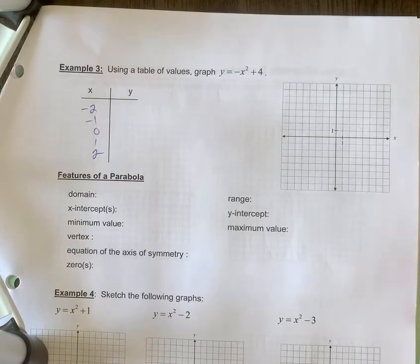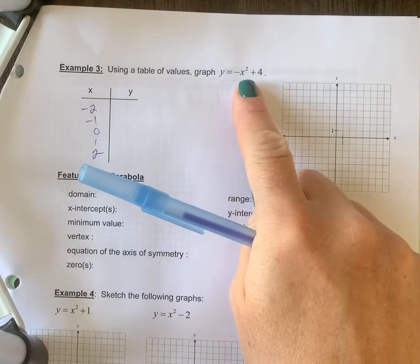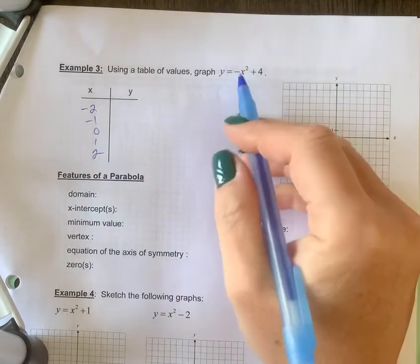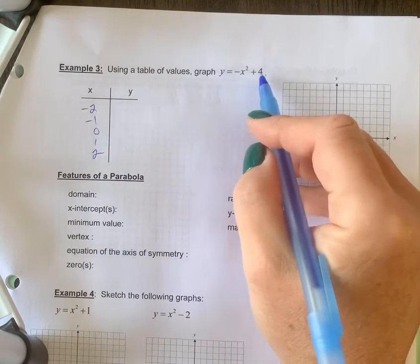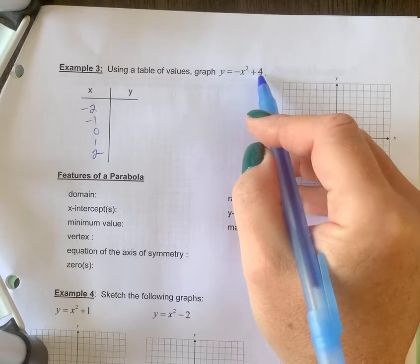Example 3: Using a table of values, we're going to graph y equals negative x squared plus 4. So we're going to look at what happens when we have a negative sign in front of our x squared, and now we've got a plus 4 in here as well.